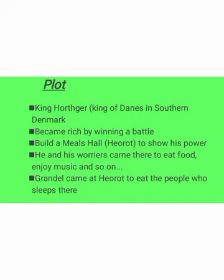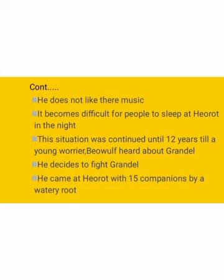The plot begins with King Hrothgar, king of the Danes in southern Denmark. He becomes rich after winning a battle, then builds a mead hall known as Heorot to show his power, where he and his warriors came to eat food and enjoy music. Thereafter, Grendel, a monster, came to Heorot to eat the people who slept there. He becomes angry because he does not like their music, making it difficult for people to stay at Heorot at night.